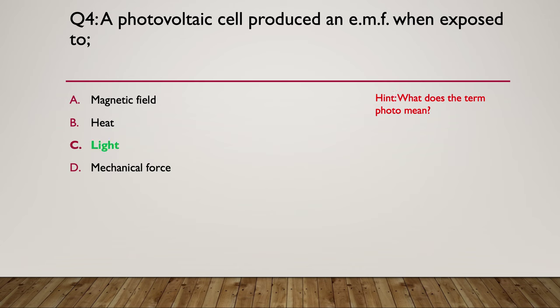The answer is C: photo means light, so a photovoltaic cell produces an EMF when exposed to light. That's what solar arrays are — the ones on top of people's houses you see these days.